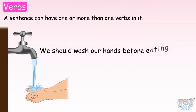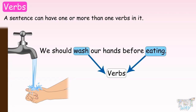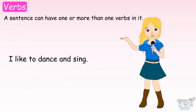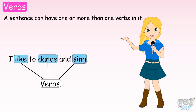We should wash our hands before eating — there are two verbs in this sentence: wash and eating. I like to dance and sing — there are three verbs in this sentence: like, dance, and sing. So you can have one or more than one verb in a sentence.